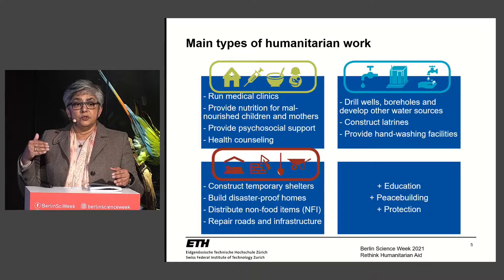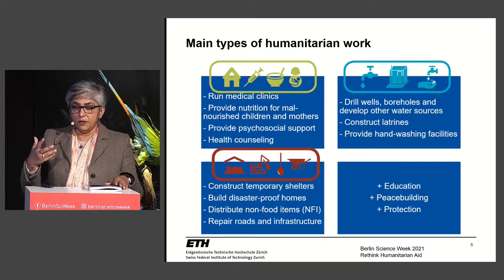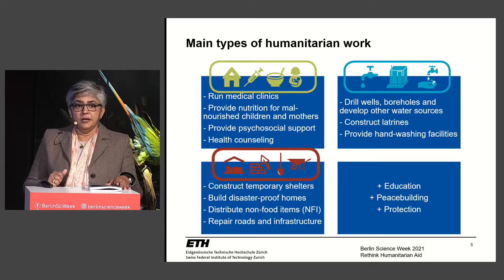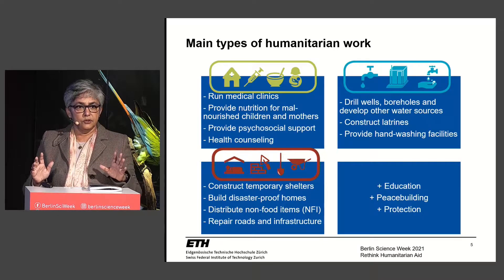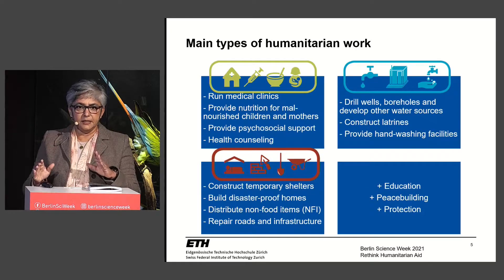Shelter programs provide exactly that — shelter for people exposed to the elements as a result of natural disasters. That means building homes, temporary shelters, tents, and disaster-proof homes. It includes distribution of non-food items like blankets and tarpaulins, and also repairing or creating infrastructure. In addition to medical, WASH, and shelter, humanitarian work involves education, peace building, and protection.